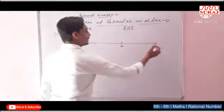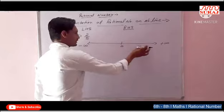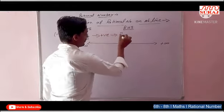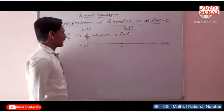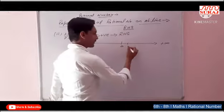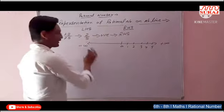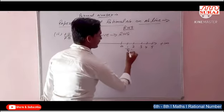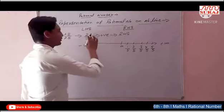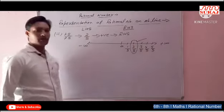2 upon 5 is positive, so represent on right hand side towards infinity. Count 1, 2, 3, 4, 5 — denominator is 5. Divide the unit into 5 equal parts and mark point number 2 upon 5.